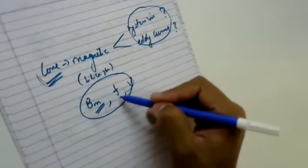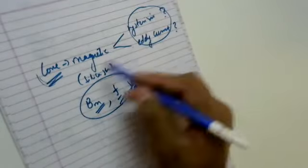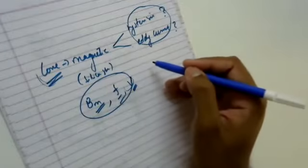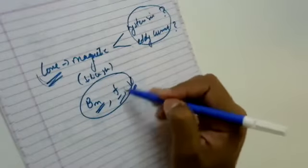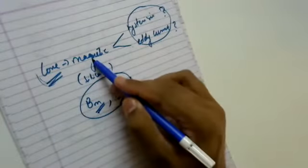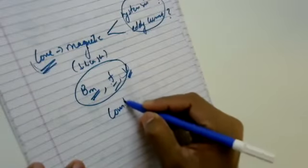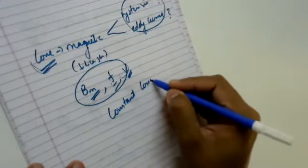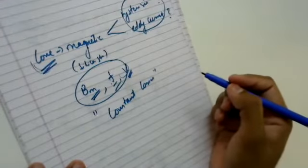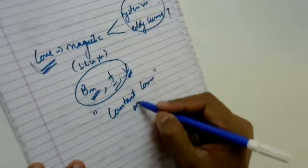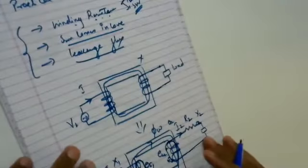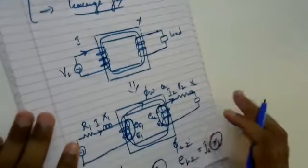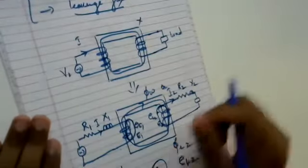Since Vm, f, and V are constant parameters, they don't vary. Because magnetic loss is dependent on Vm, f, and V — which are all constant — magnetic losses are also called constant losses or fixed losses. Now I would like to ask some questions to get feedback on whether you are able to understand this diagrammatic representation of the practical transformer.